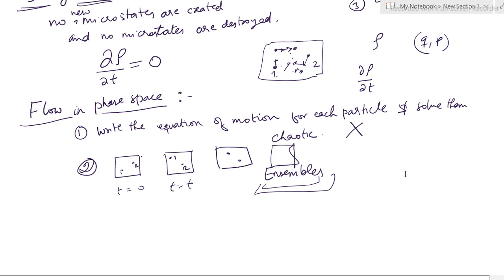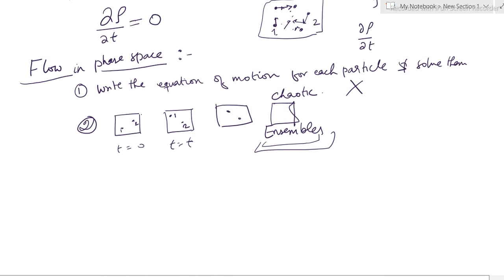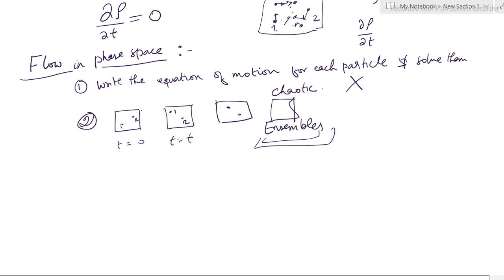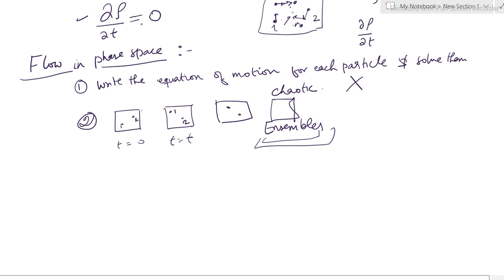In the last lecture we studied phase space, phase space density, and steady state. We found that the phase space density in steady state is constant — no more phase space points are created and no more are destroyed. So in steady state, del ρ / del t = 0.